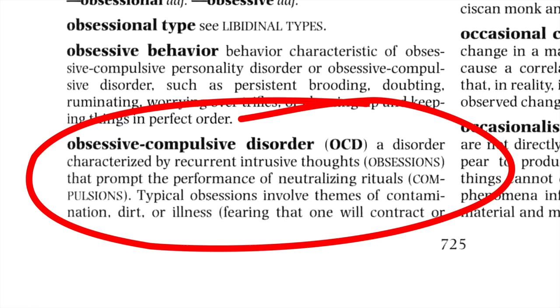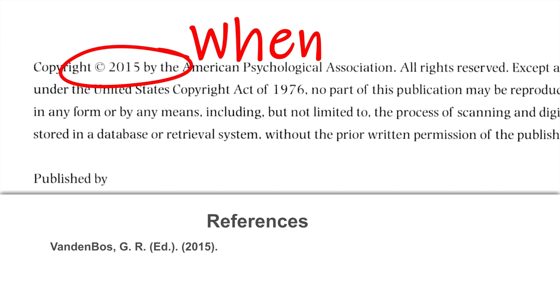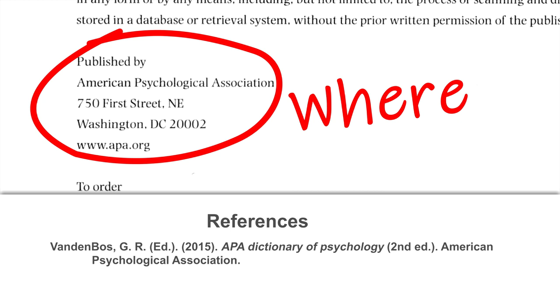Each of these need to be referenced differently. I've found a definition for OCD in the second edition of the APA Dictionary of Psychology. As you know, I'm totally fixated on referencing. The editor of this dictionary is Gary R. Vandenbos. The publication date of the dictionary is 2015. The title is APA Dictionary of Psychology. Remember, this title should be typed in italics.